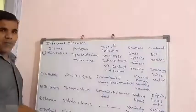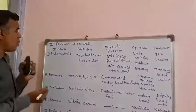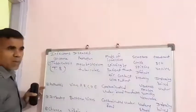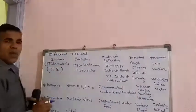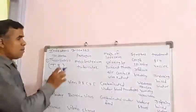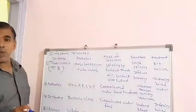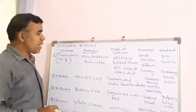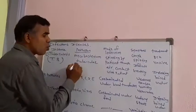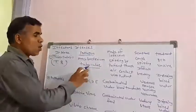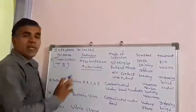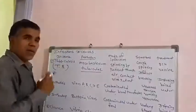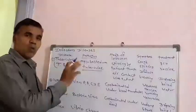Number one: Tuberculosis. In short, it is known as TB. The name of the pathogen is Mycobacterium tuberculae. Mycobacterium tuberculae is the pathogen which enters our human body causing TB.